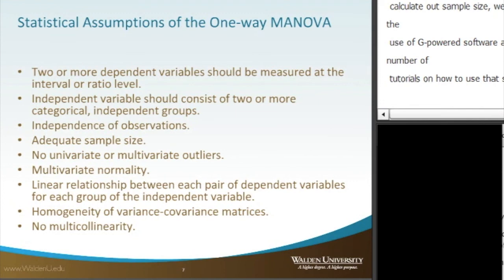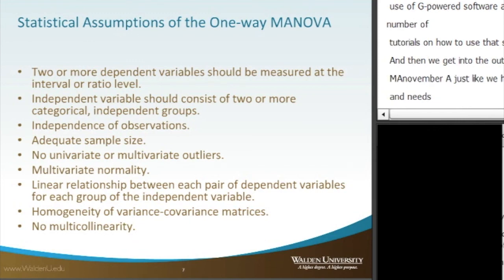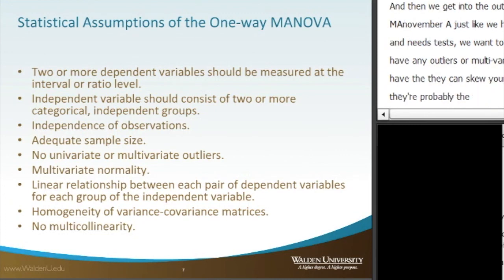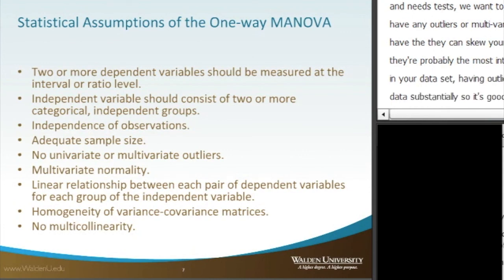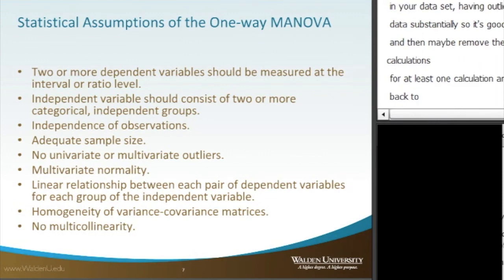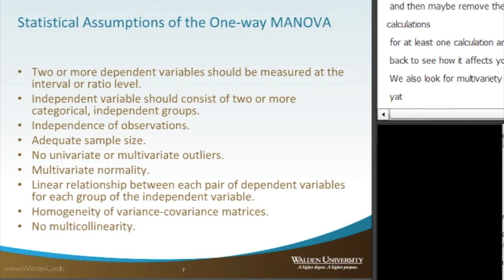Next we get into outliers. For MANOVA, just like with other tests of means, we want to make sure we don't have any univariate or multivariate outliers. Outliers can truly skew your data. Even though outliers are probably the most interesting data points in your data set, having them can substantially skew your results. It's good to identify your outliers, remove them for at least one calculation, then put them back to see how it affects your results. We also look for multivariate normality, which reflects the MANOVA being a parametric test — you want all things to be normally distributed.